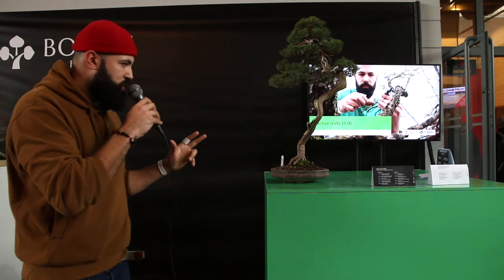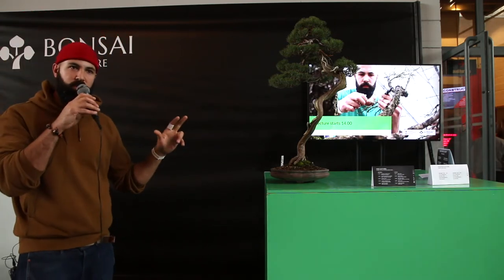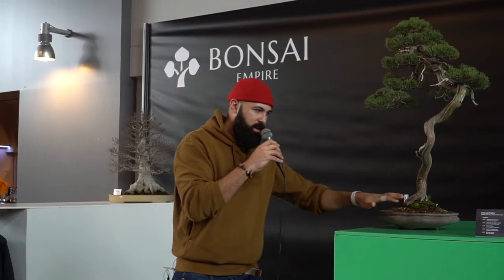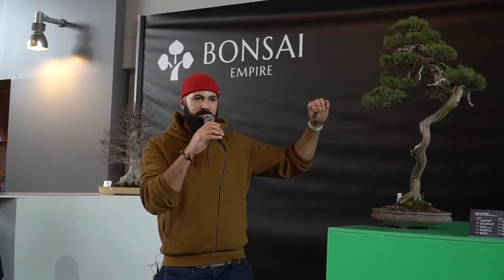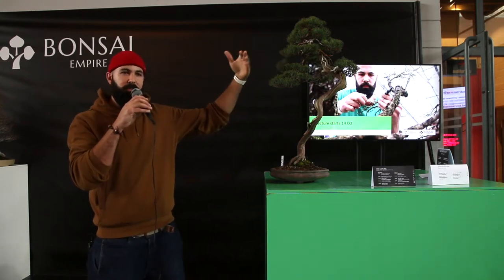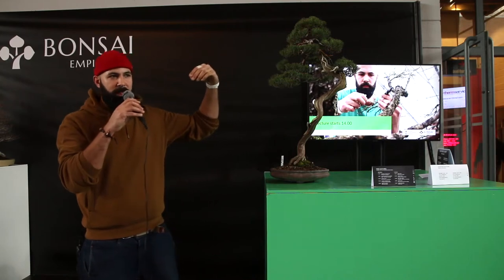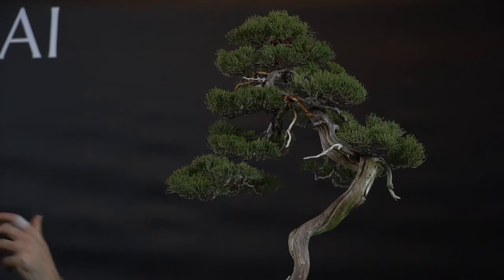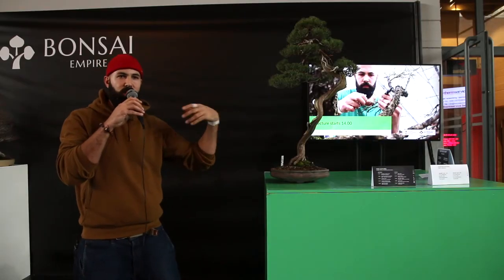On this tree, there are three main things to look at when you build a tree and choose the front: the base — the nebari — the trunk line, and the main branch. Also, give a direction to the apex. Some people do, some don't. But when you give direction to the apex, it gives more dynamic and the tree is less boring.